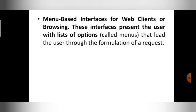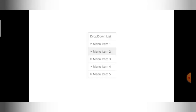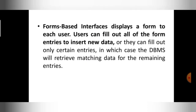These interfaces present the user with a list of options, and the user can go through the list and select whatever item or option they want. The best example is a drop-down menu, where the menu items are displayed and the user can select any menu item they want. This is one way of providing an interface to the database user.